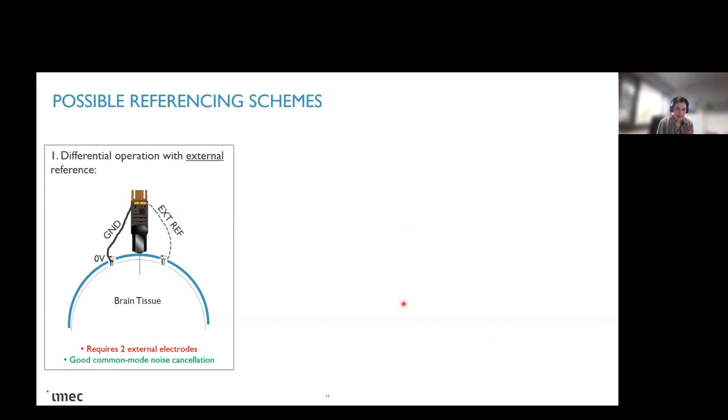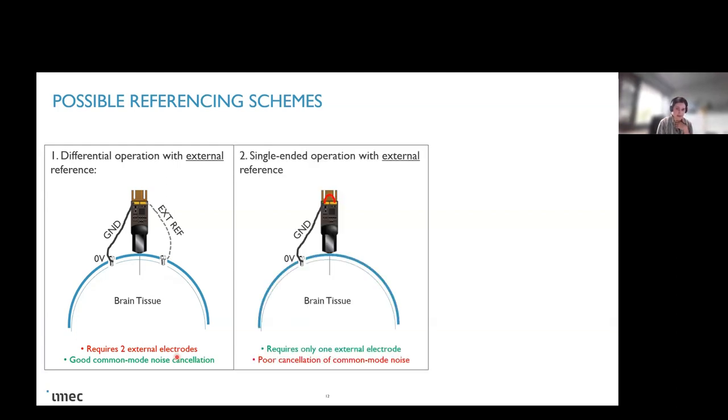So I will explain here in three different reference schemes. The first one is to have your external reference. As explained before, this is a differential operation where the external reference is connected as well. For example, through a screw or other means, there are many techniques to connect your external reference. The problems here, if you want to have this differential operation, means that your ground is separate from the reference, you will need two external electrodes. And this, for certain experimental setups, can be an issue. But you will have good cancellation of your common noise.